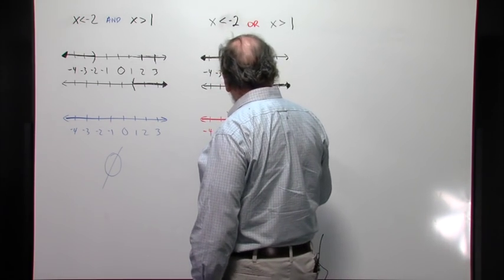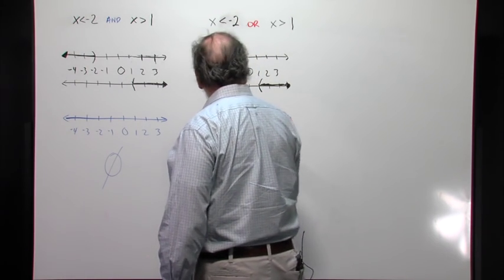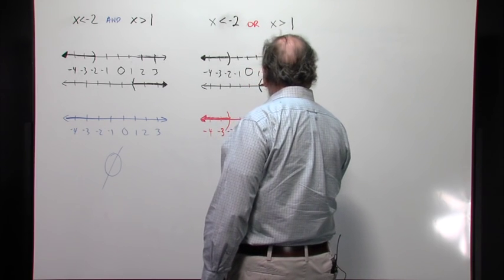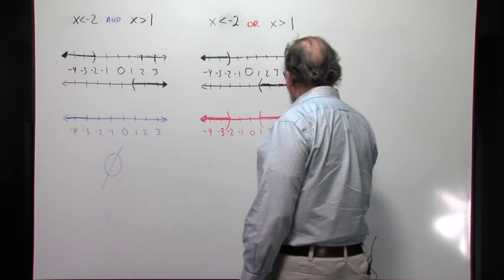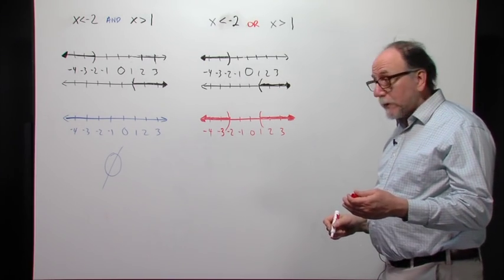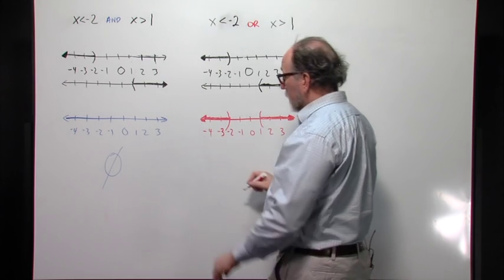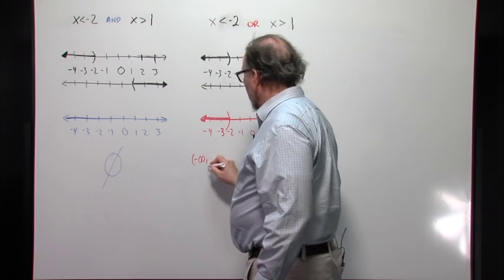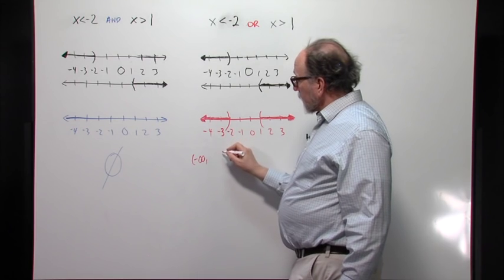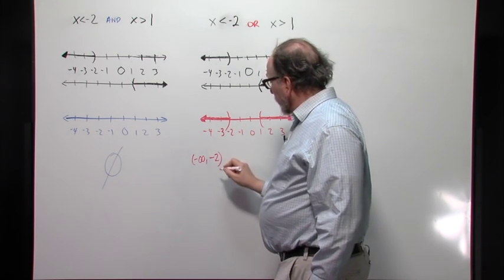So we're going to graph all of those graphs above together in one graph. And that will be the solution to this. How do we write that in interval notation? Well, we can see far to the left here, we go toward negative infinity. That interval stops at negative 2 with a parenthesis.